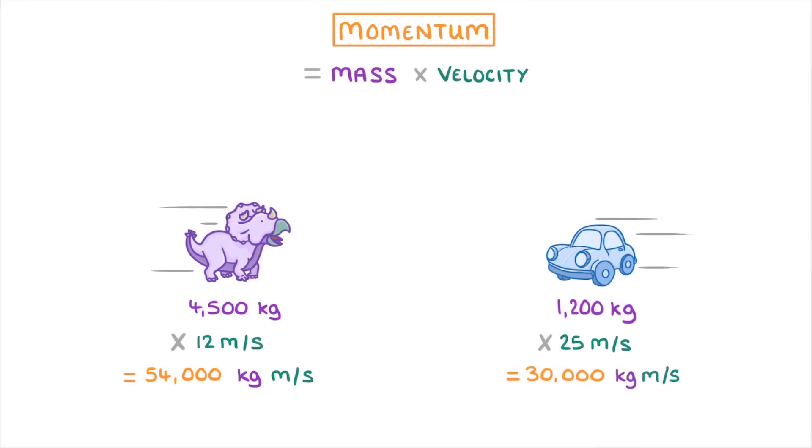An important thing to remember though is that momentum is a vector quantity, so it has both a magnitude and a direction. So here, if we consider the forward direction to be to the right, then the dinosaur will have a positive momentum, but the car must have a negative momentum.